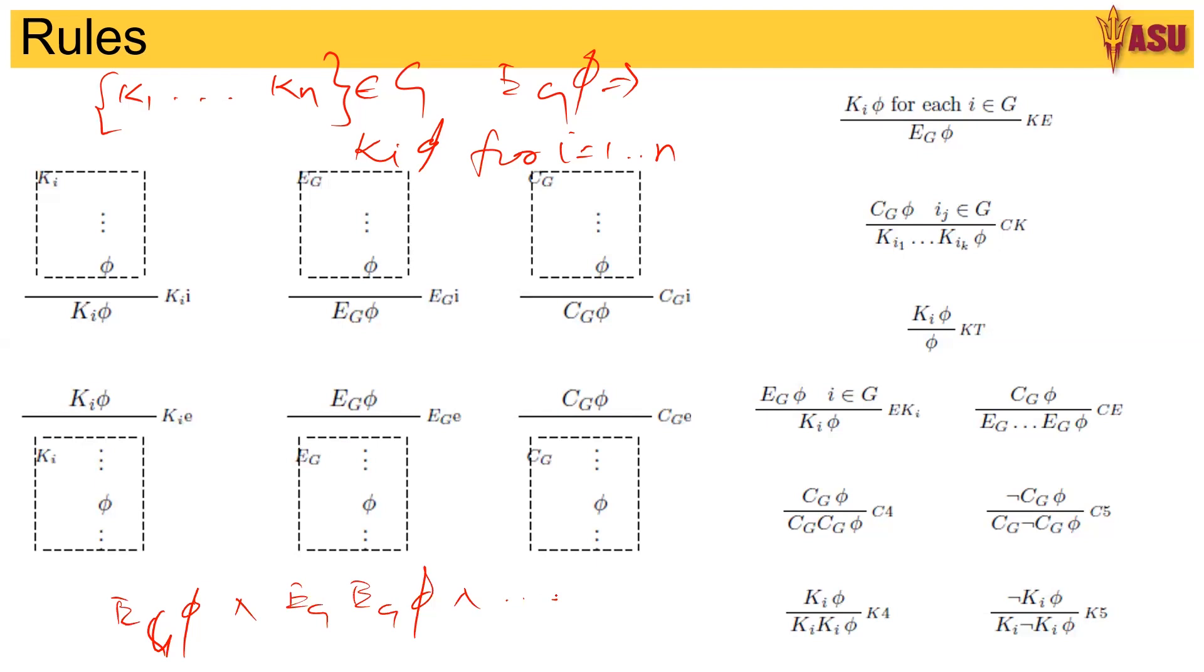These are the rules of introduction and elimination of C of G. Along with this, we have the rules of elimination and introduction for K, E, and C. These come directly from the definition of E and K and C. And if there is an agent that knows phi, an arbitrary agent, then we can say phi is true. This is the T rule for an agent K.